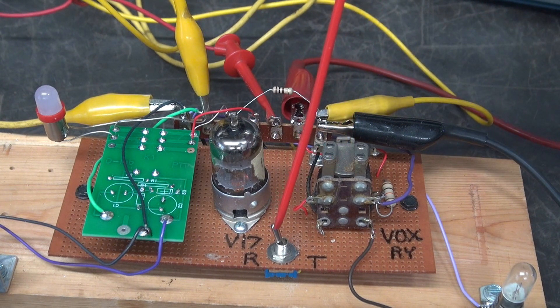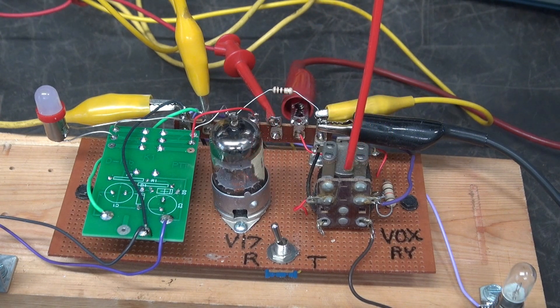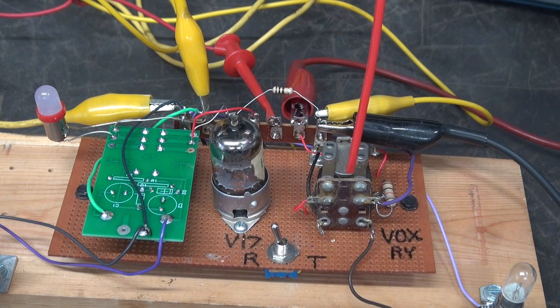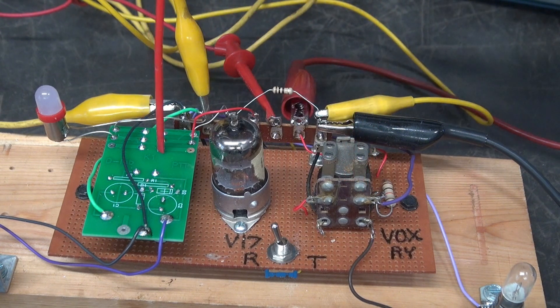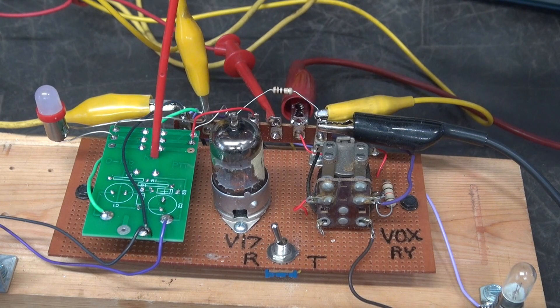So V17 is a 12AT7 and here is the VOX relay. This switch toggles negative voltage to that tube which would key this relay just like it does in the HT32.